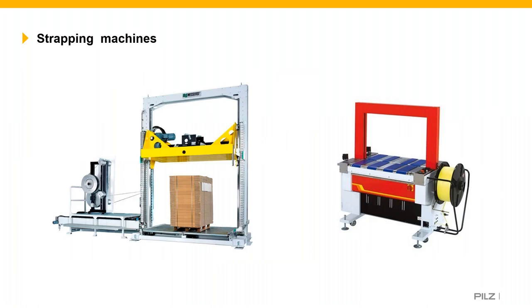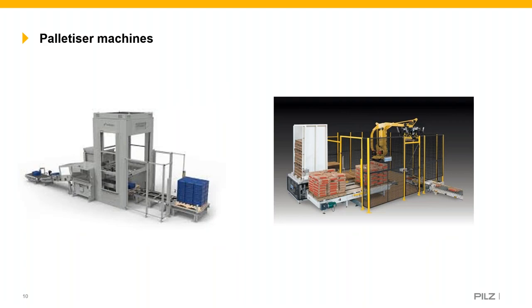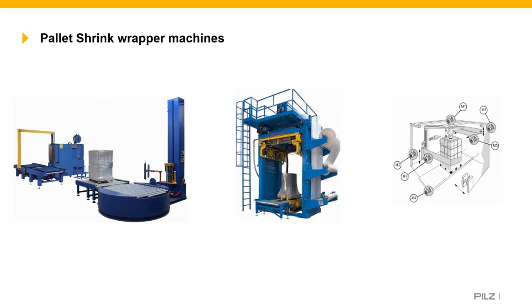Here we have examples of strapping machines. For these standards we're looking at packaging sizes less than 400 millimetres. We also have palletizer-type machinery — a large shrink wrapper and a robot palletizer, which is becoming more common. Pallet shrink wrapping machines include a pallet moving conveyor, a cling film wrapper, and bander.